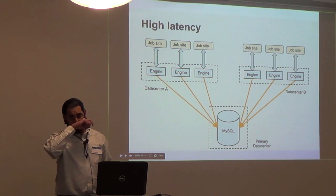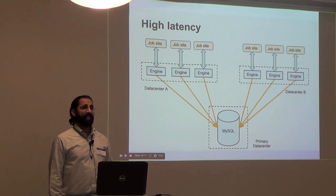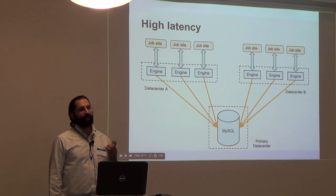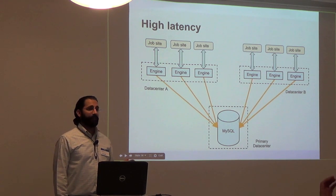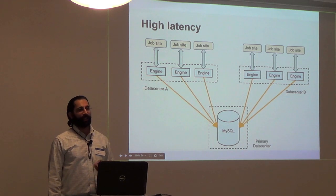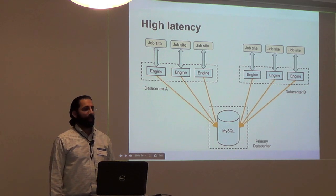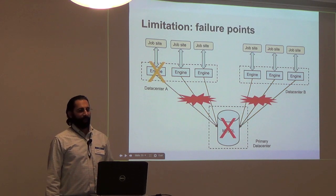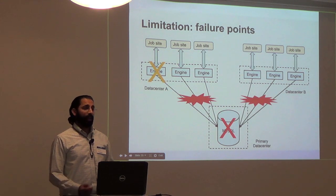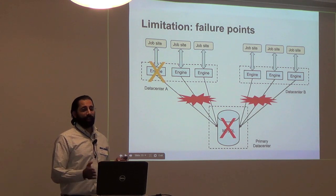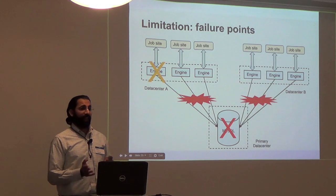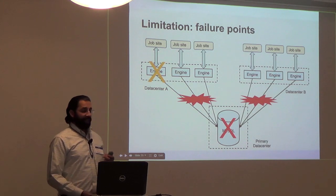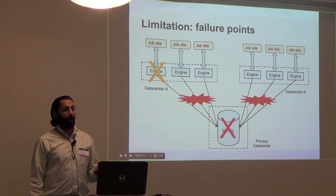Cross data center connections have latency of about 30 to 60 milliseconds on average, and this applies to every single database operation. Higher latency means lower throughput, which limits our ability to get all the jobs fast. We could increase the number of threads and engines, but that would just make the problems worse. If we lose the network, all work is stopped. If we lose the MySQL database, all work is stopped. This architecture won't do the job.